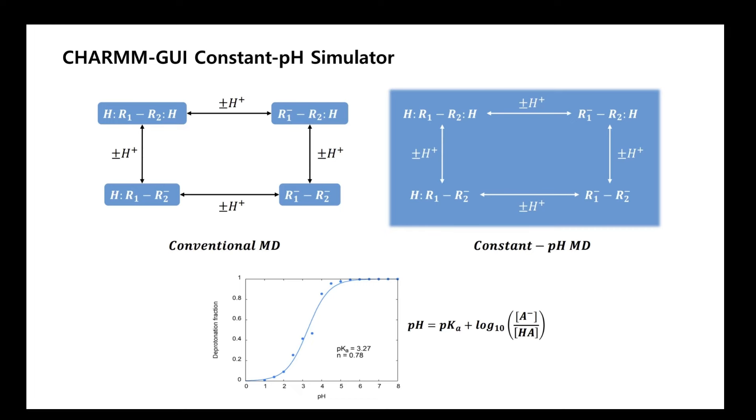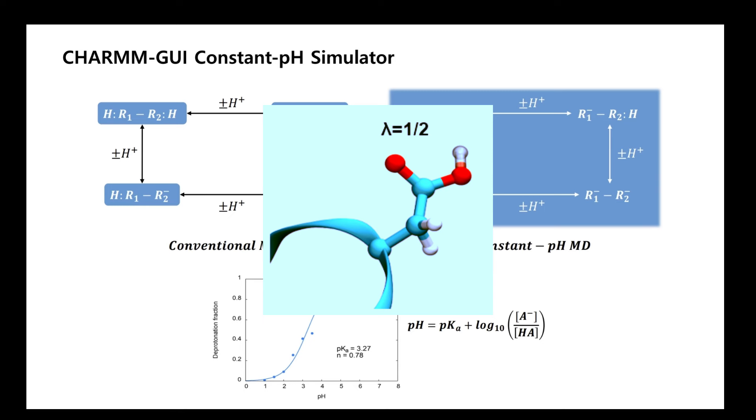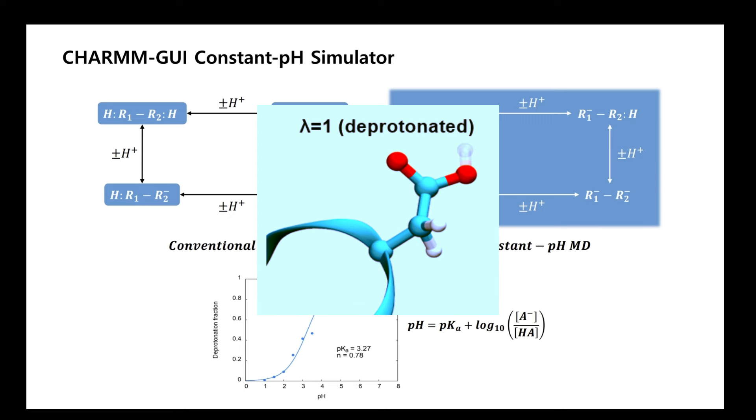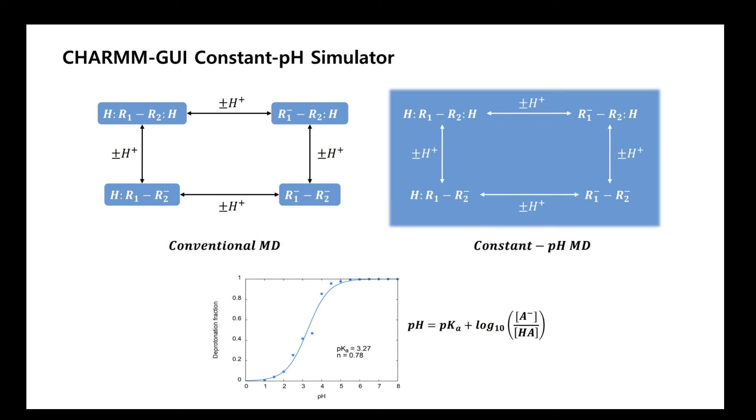Constant pH molecular dynamics, CPHMD, simulation can capture a complex interplay between multiple protonation states of titratable residues of proteins and their surrounding environments. During the CPHMD simulation, distinct dynamics can be observed by subsequent protonation and deprotonation of titratable residues at certain pHs, and the pKa of those residues can be calculated from the Henderson-Hasselbalch equation when generating a titration curve with multiple simulations at a range of pHs.